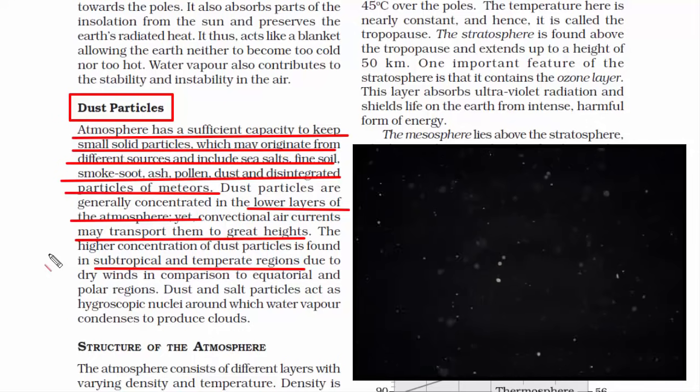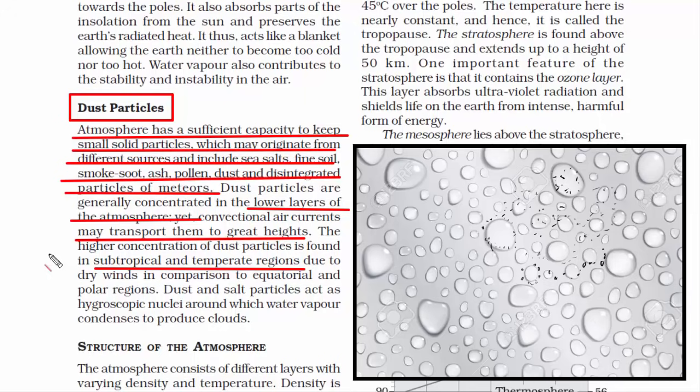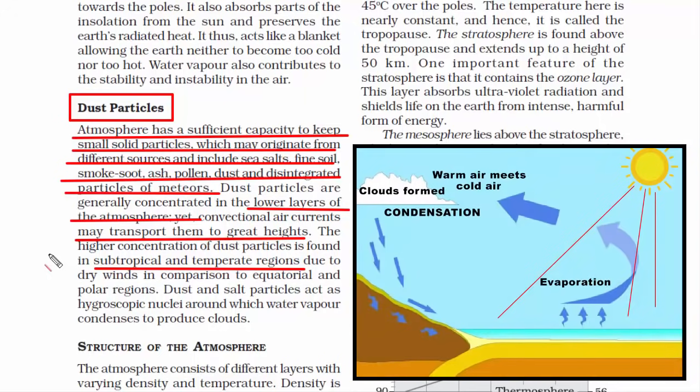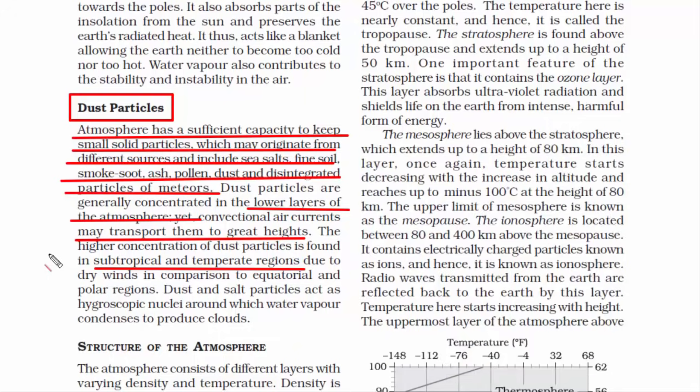So the combination of this water vapor and dust particles together forms a cloud. Obviously you must have heard that cloud is a result of condensation where the water vapor turns into visible water droplets. But then if there isn't anything to hold them up in the air, how will a cloud form? Otherwise droplets will fall and it will simply rain.